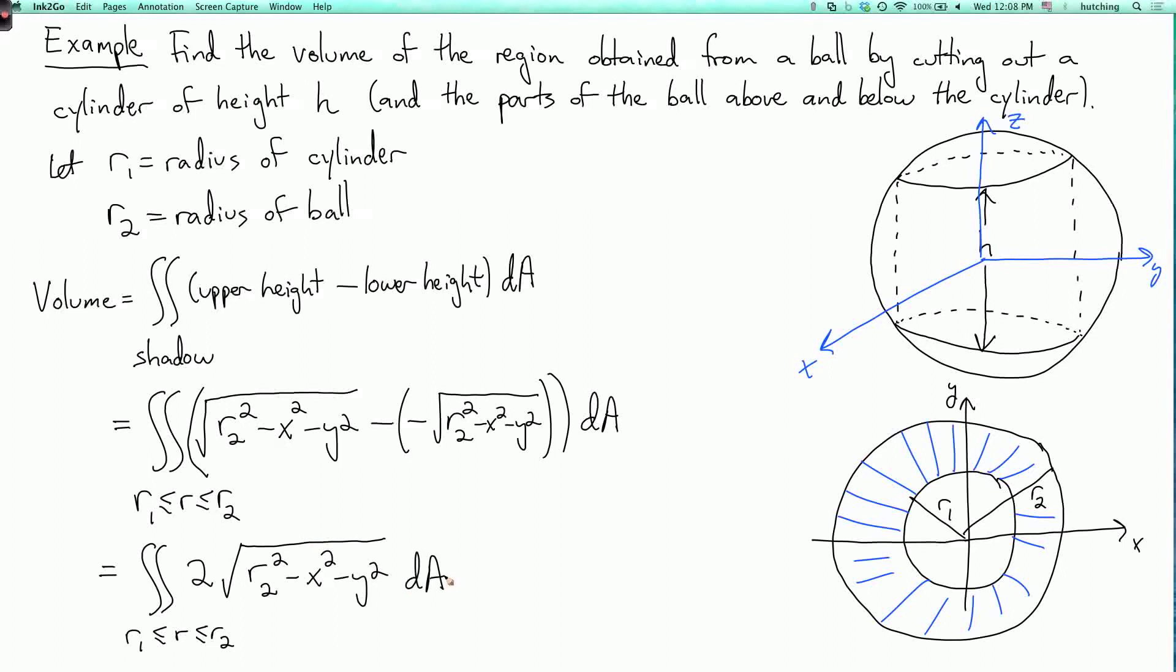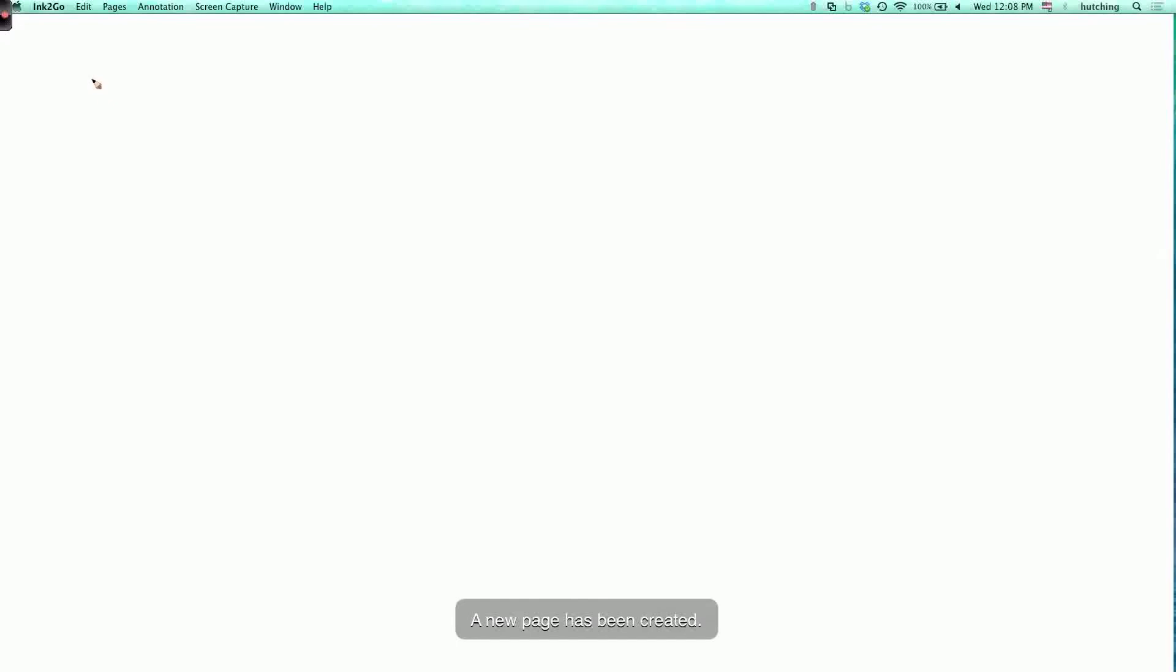Now to evaluate this integral, it will be a lot more convenient if we do it in polar coordinates. So let's do that on the next page. We want to find two times the double integral over r1 is less than or equal to r is less than or equal to r2 with the square root of r2 squared minus x squared minus y squared dA.